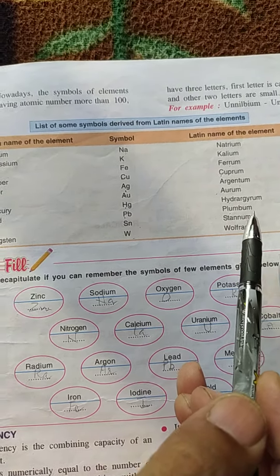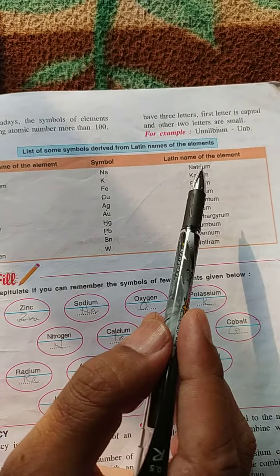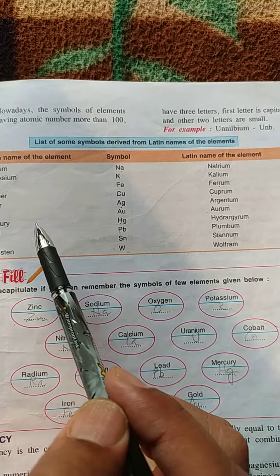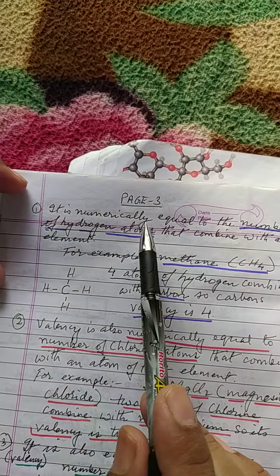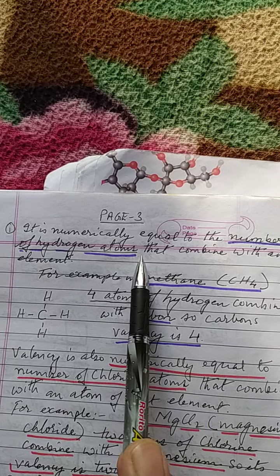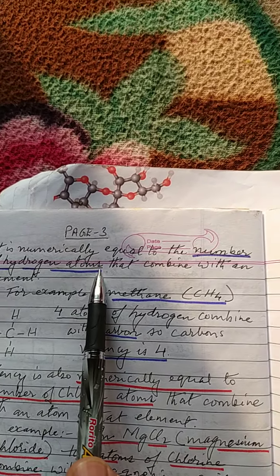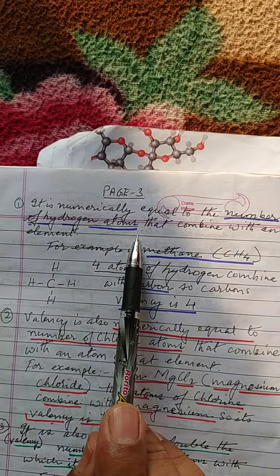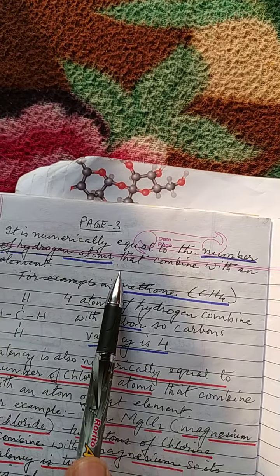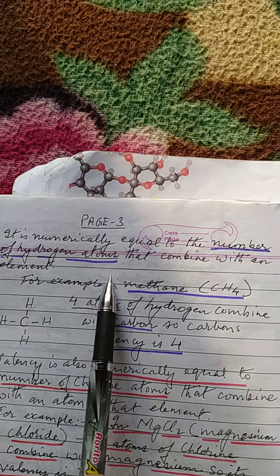So we see that this is how we can make the symbols of certain Latin-named elements. Now coming back to valency — valency is numerically equal to the number of hydrogen atoms that combine with an element. Every hydrogen atom has one electron in its outermost shell, so its valency is one.